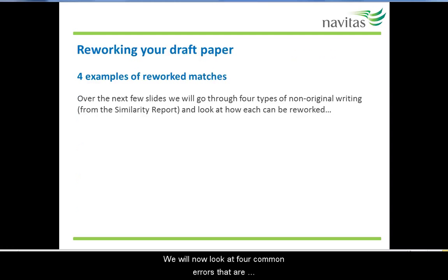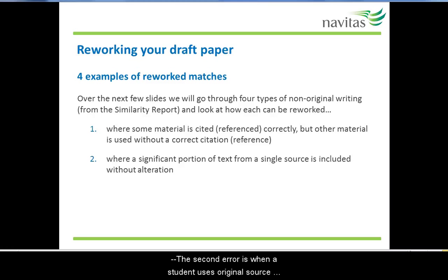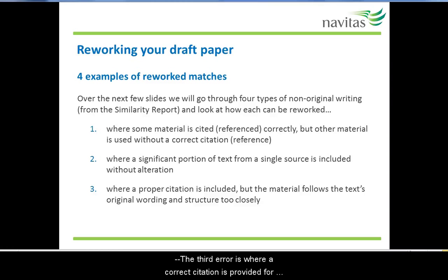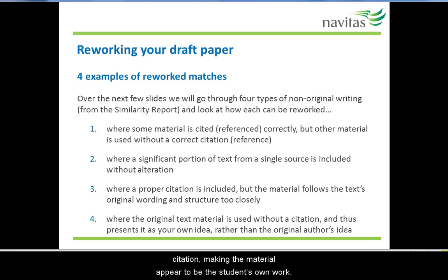We will now look at four common errors that are usually present in student papers and how each of these errors can be corrected. The first error is when a student uses source material but only some of the material is cited correctly, while other material is either cited incorrectly or not cited at all. The second error is when a student uses original source material but cites it as a paraphrase. The third error is where a correct citation is provided for paraphrase material, but the student has stuck very closely to the original wording and structure found in the source. The last error is where a student has taken material directly from a source and has not provided any citation, making the material appear to be the student's own work.